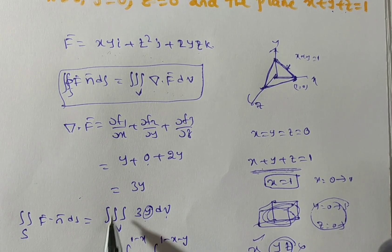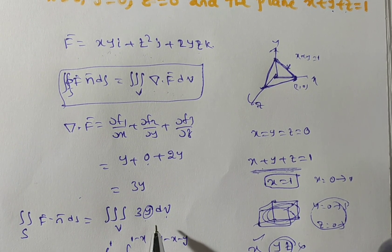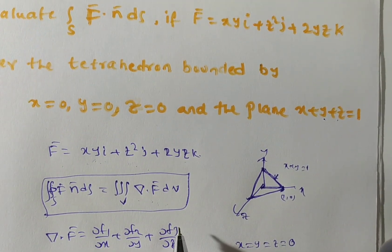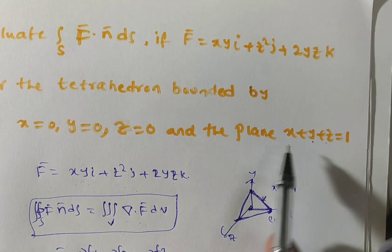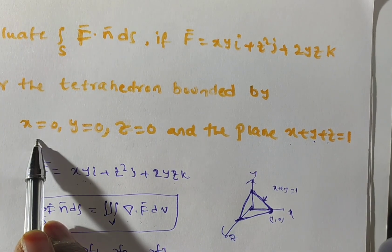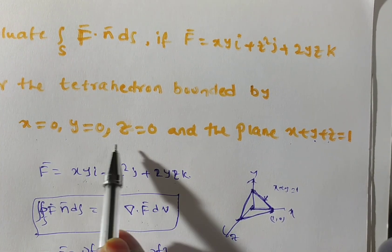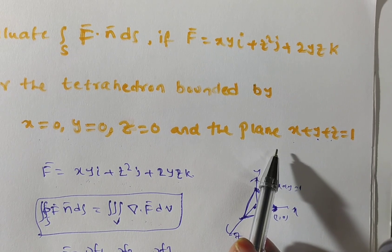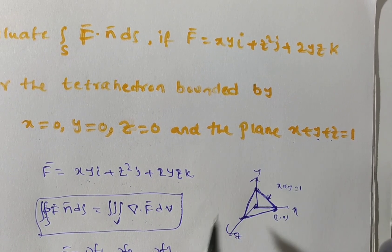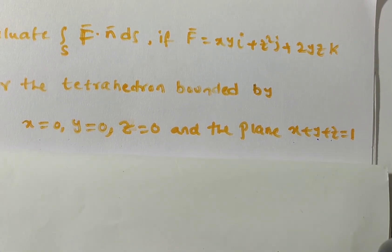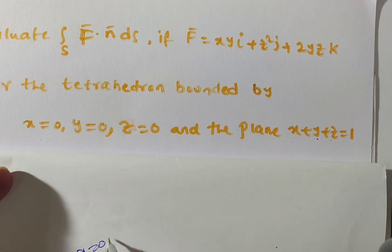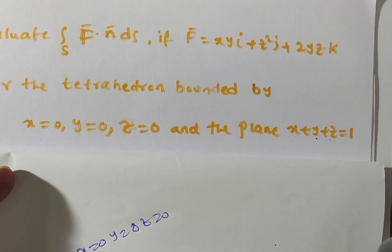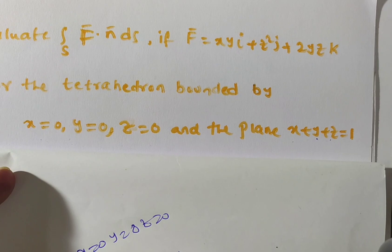To evaluate this triple integral — nothing but a volume integral — we need to find the limits of x, y, z. The tetrahedron is given by x = 0, y = 0, z = 0, and the plane x + y + z = 1. Consider the x-axis, y-axis, and z-axis. On the x-axis, y and z are 0, so from x + y + z = 1 we get x = 1. Now draw the tetrahedron.